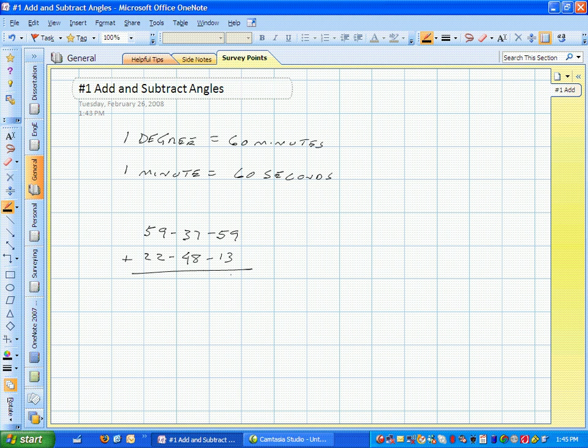Do the math, 9 plus 3 is 12, carry the 1. That's 70, so you have 72 seconds, but the maximum you can have is 60 seconds. So this becomes 12, you carry 1 minute, and this is 16.